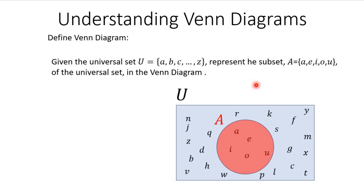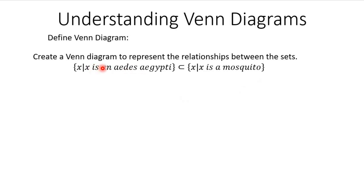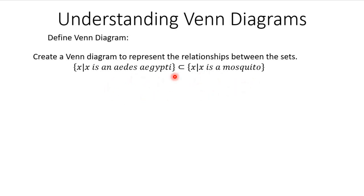Let's take a look at another example. Create a Venn diagram to represent the relationship between the sets. The first set is the set X such that X is an Aedes aegypti, and that's a subset of the set X such that X is a mosquito — which means that all Aedes aegypti are also mosquitoes.